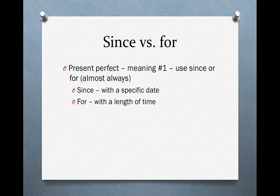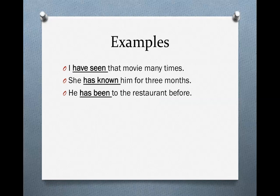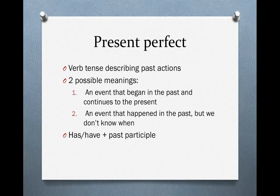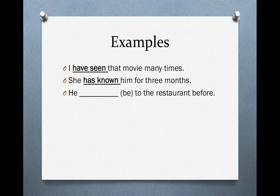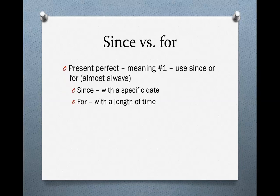Now, when you use present perfect for meaning number one. Let's go back. Do you remember meaning number one? An event that began in the past and continues to the present. That's what we're going to talk about first. In that case, almost always, we use since or for. We use since with a specific date, and we use for with a length of time. Let me show you.